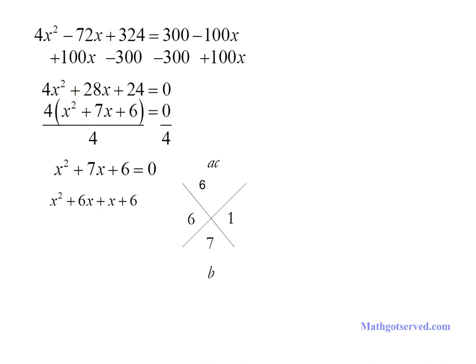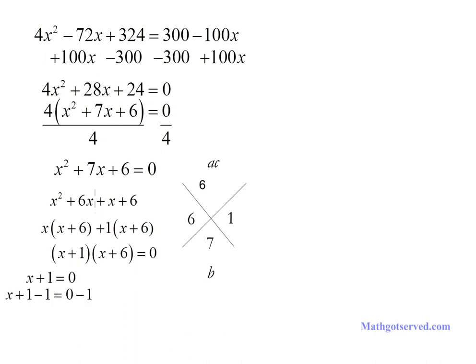We replace the middle term and factor by grouping. That gives us x plus 1 times x plus 6 equals zero. Now we use the zero product property: set x plus 1 equal to zero — subtract 1 from both sides — giving x equals negative 1. Set x plus 6 equal to zero — subtract 6 from both sides — giving x equals negative 6. So these are the potential answers to the radical equation.